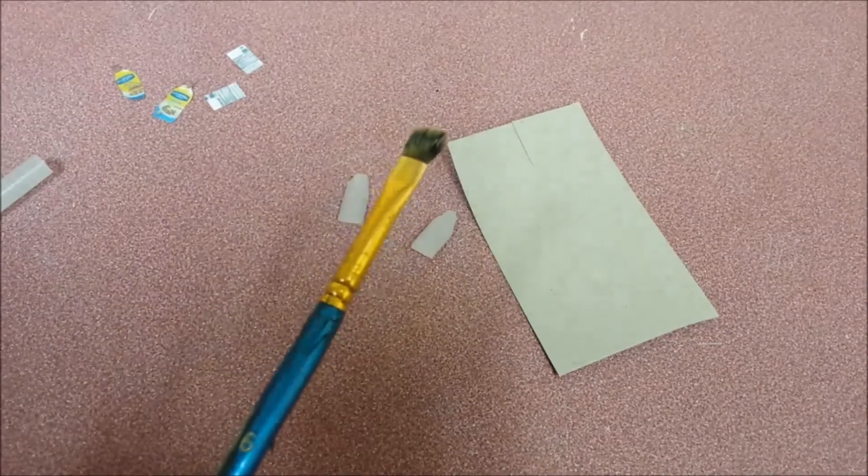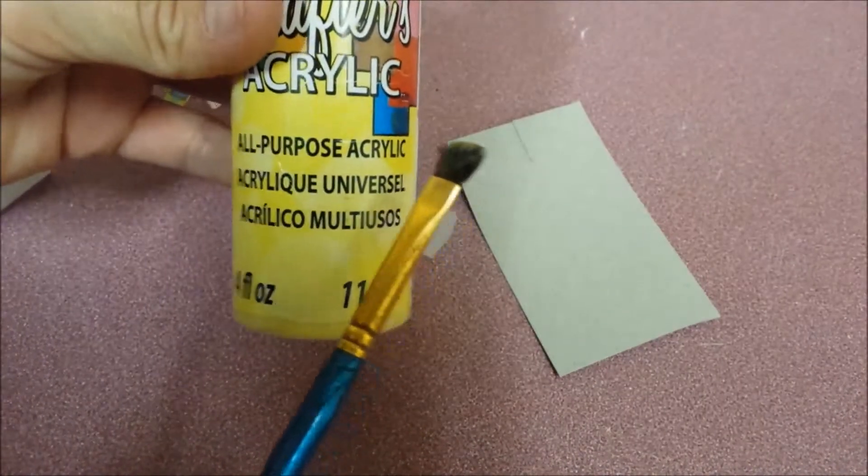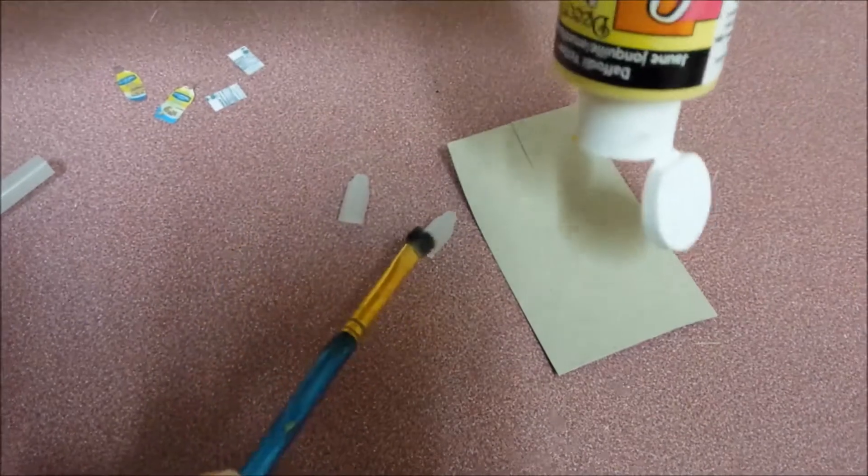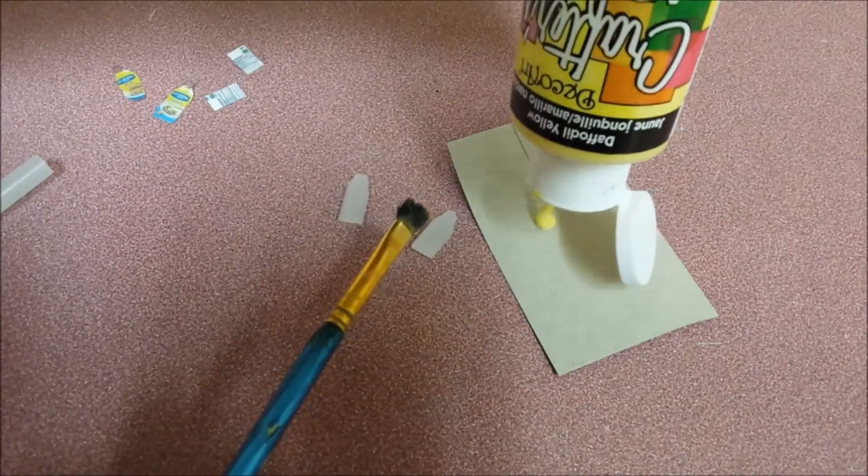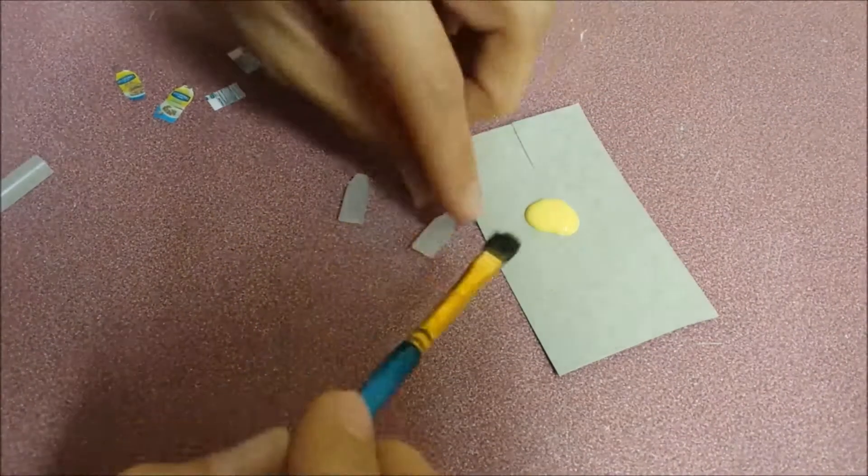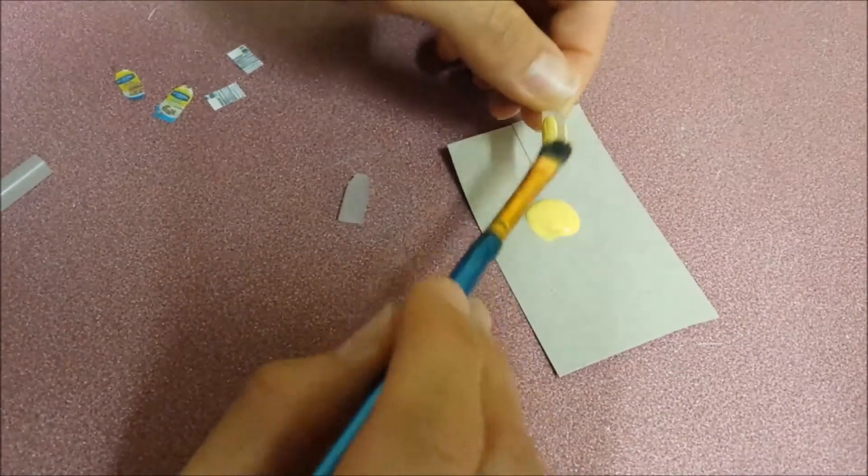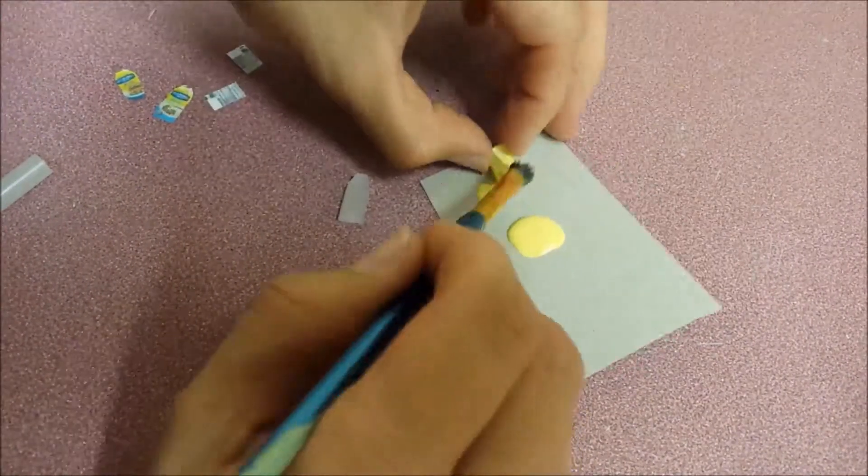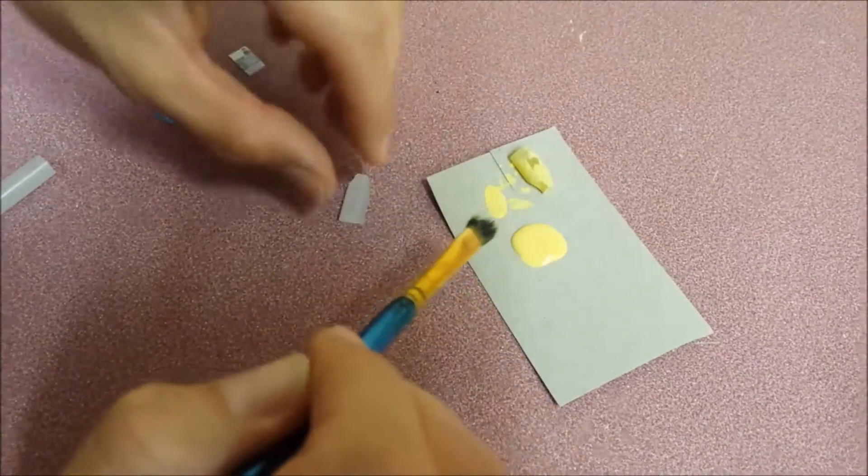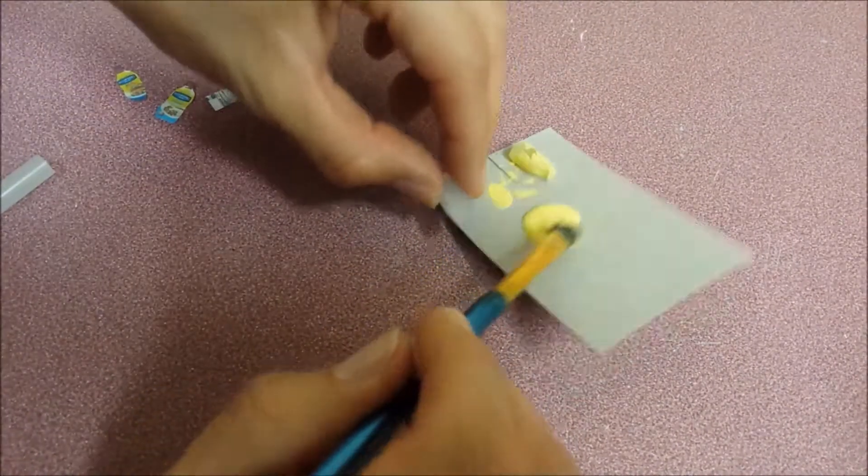And with a paintbrush and some light yellow, we're going to paint those two. I'm going to let this dry first, and then give it a second coat.